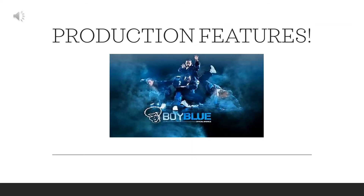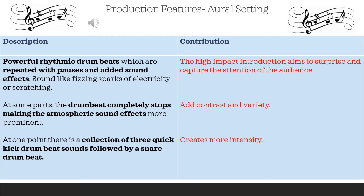Let's now look at production features, starting with oral setting — what you can hear when you watch the work. There are powerful rhythmic drum beats repeated with pauses and added sound effects, such as fizzing sparks of electricity or scratching, creating a high-impact introduction that aims to surprise and capture the audience. At some points the drum beat completely stops, making atmospheric sound effects more prominent, adding contrast and variety. At one point there is a collection of three quick kick drum beats followed by a snare drum beat, creating more intensity. Please listen again and note what oral setting affects you.